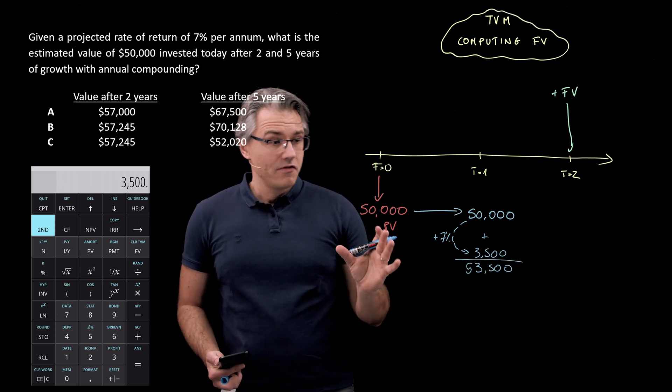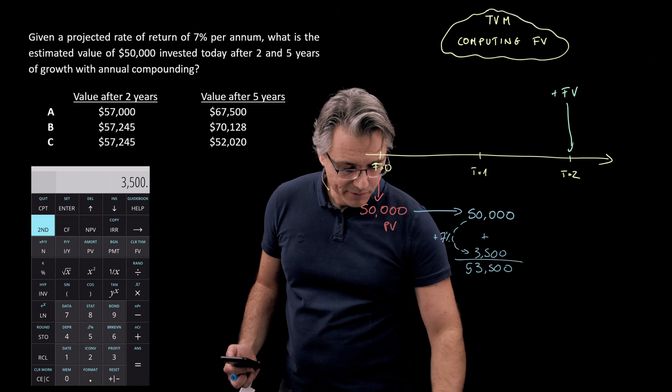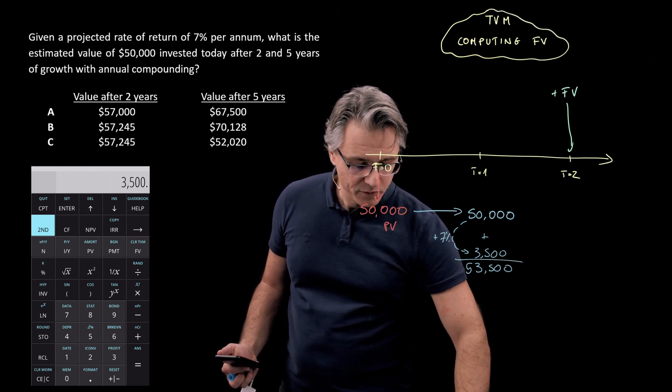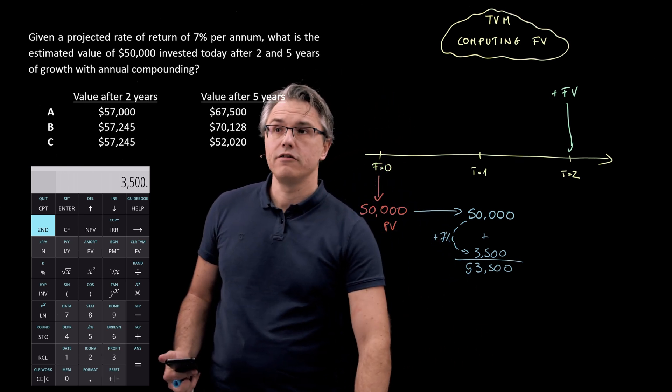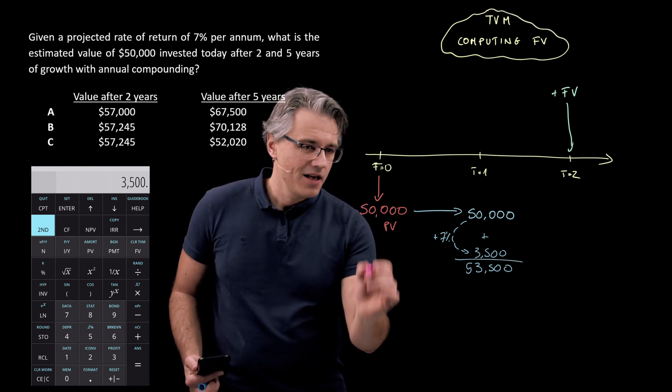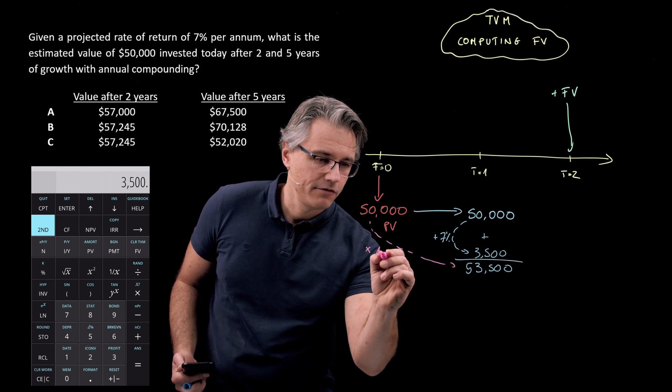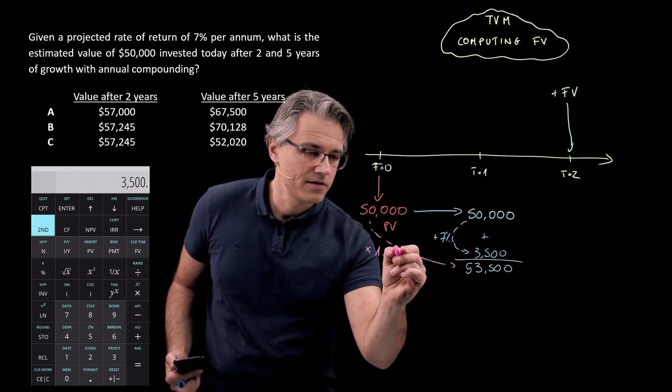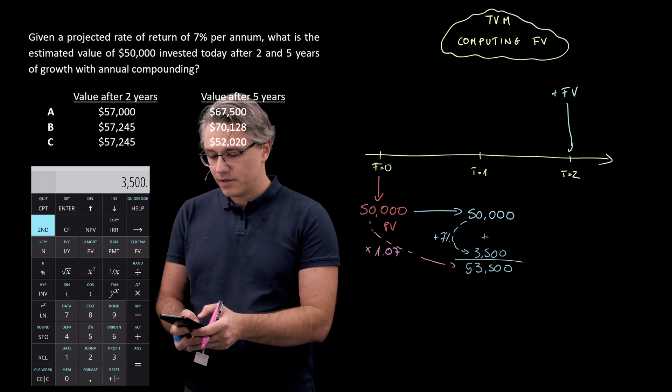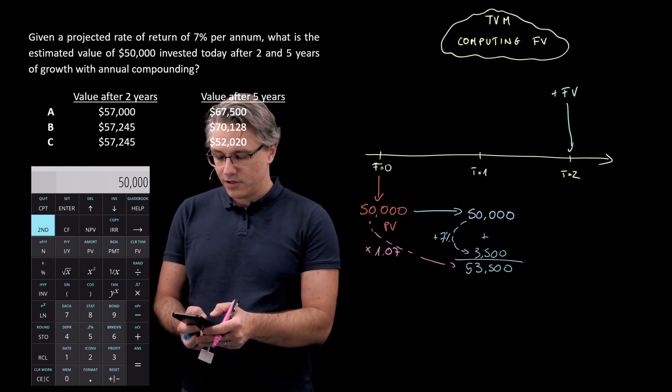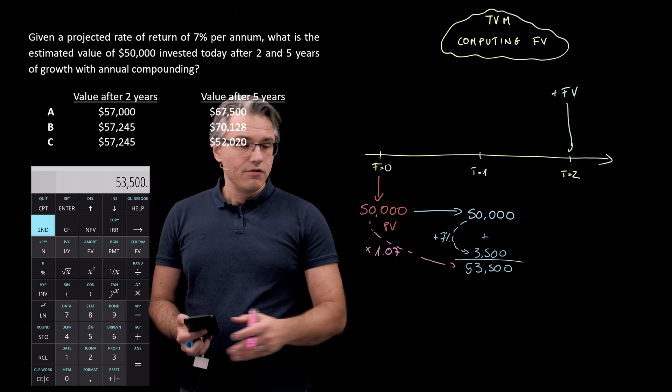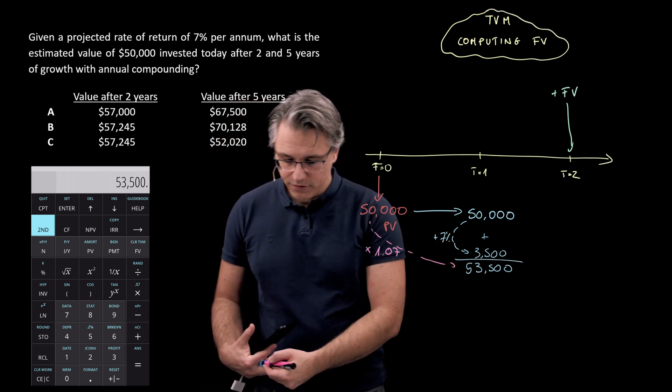Now, the same thing, and for many of you, this will be obvious, but for those of you just starting out with time value of money, that may not be so obvious. If you take 50,000 and multiply it by a factor of 1.07, so 1 plus the rate of return required, 50,000 times 1.07, you're going to get 53,500 anyway.